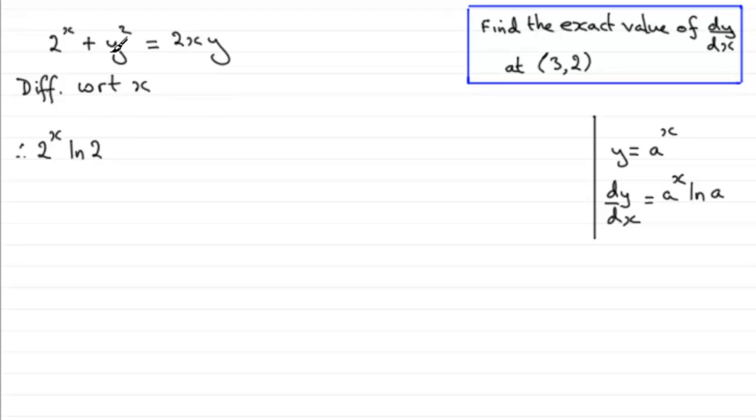Now when it comes to differentiating y squared with respect to x, if we're doing implicit differentiation, this is the same as differentiating it with respect to y, which is 2y, and then we put on the dy/dx at the end. We tag that on to the end.